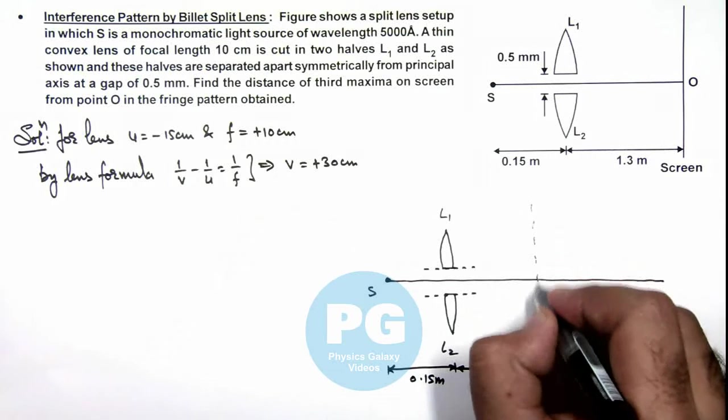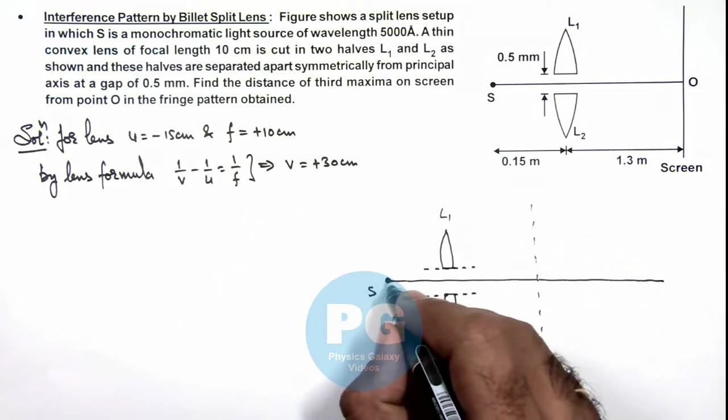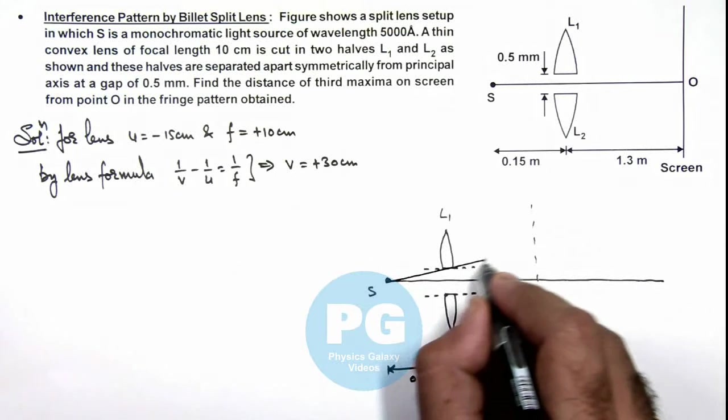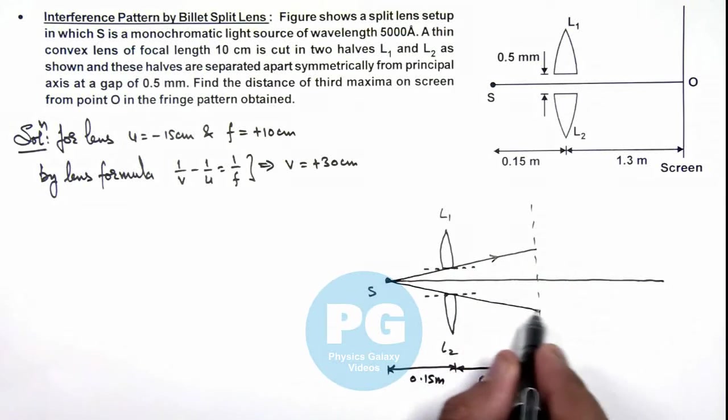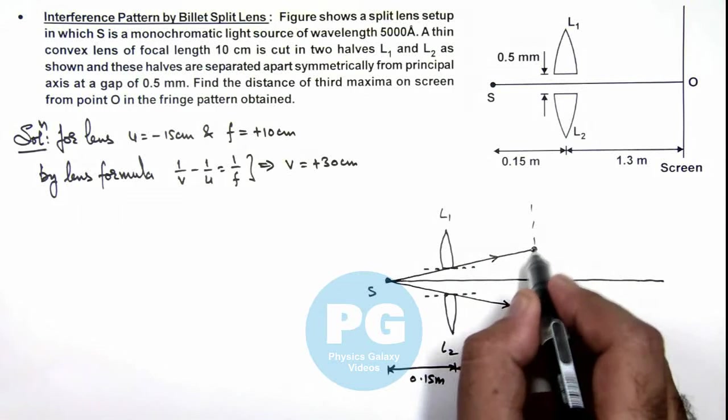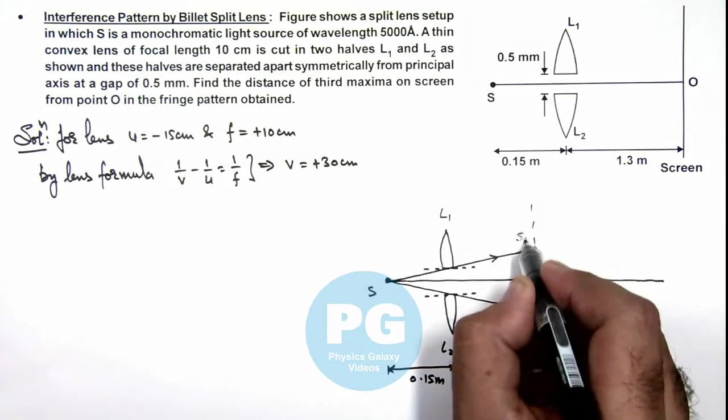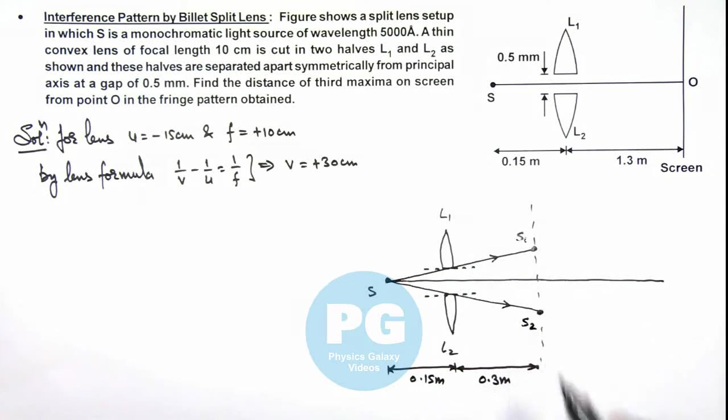On this line images are obtained and the light rays which pass through the optic center of the lens will pass undeviated. So these are the light rays which will be passing through the point of images and say these images are S1 and S2.